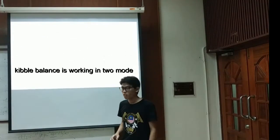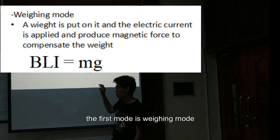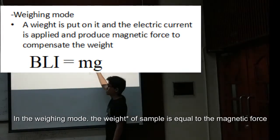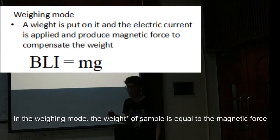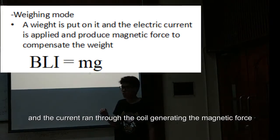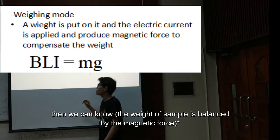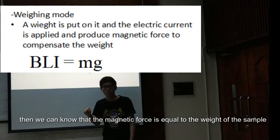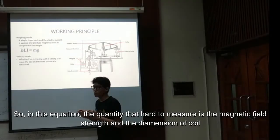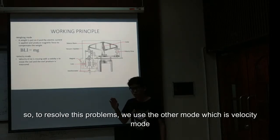The Kibble balance is working in two modes. First mode is weighing mode. In the weighing mode, the sample is put on the plate and then the current runs through the coil, generating the magnetic force. Then we know that the magnetic force is equal to the weight of the sample. In this equation, the quantity that is hard to measure is the magnetic force and the length of the coil.